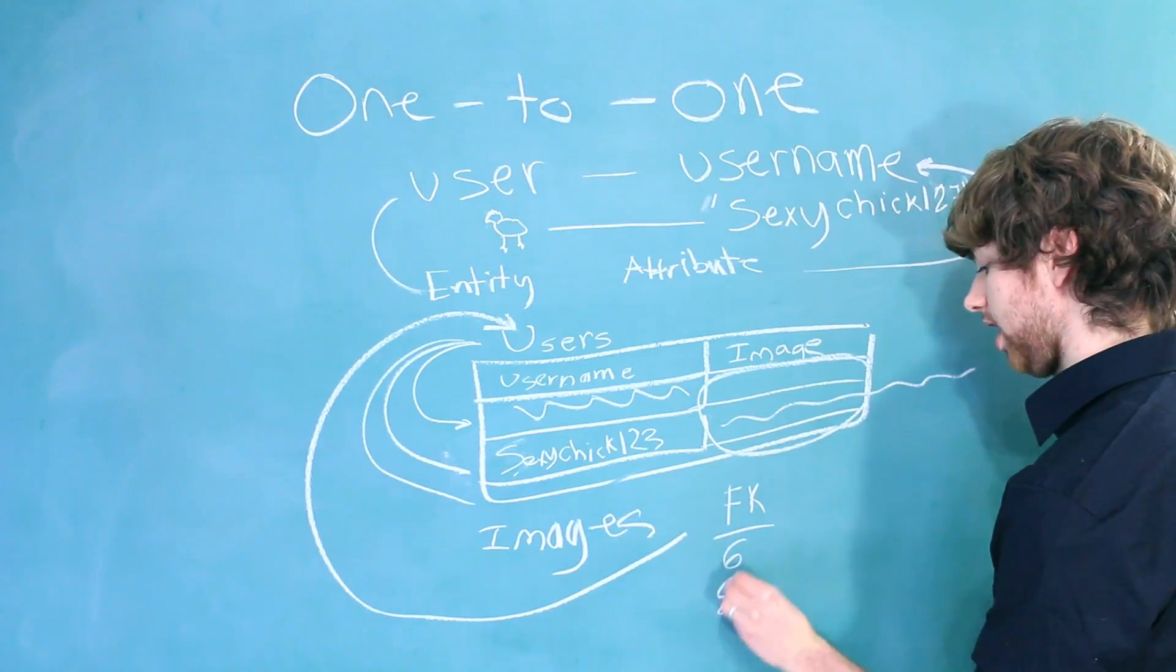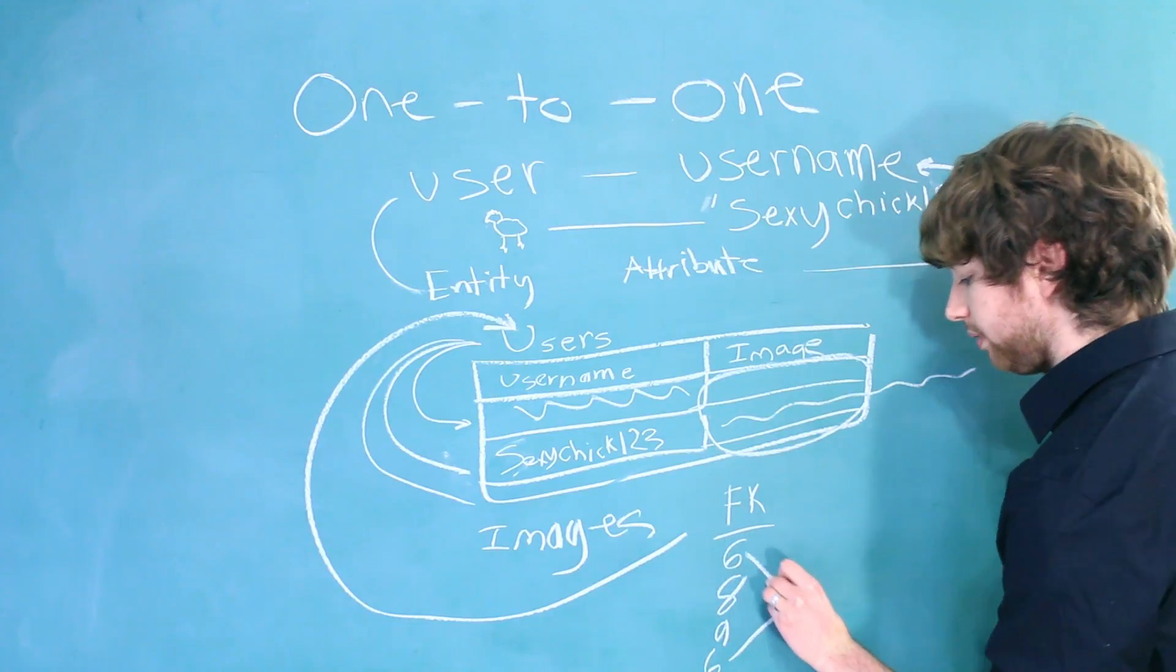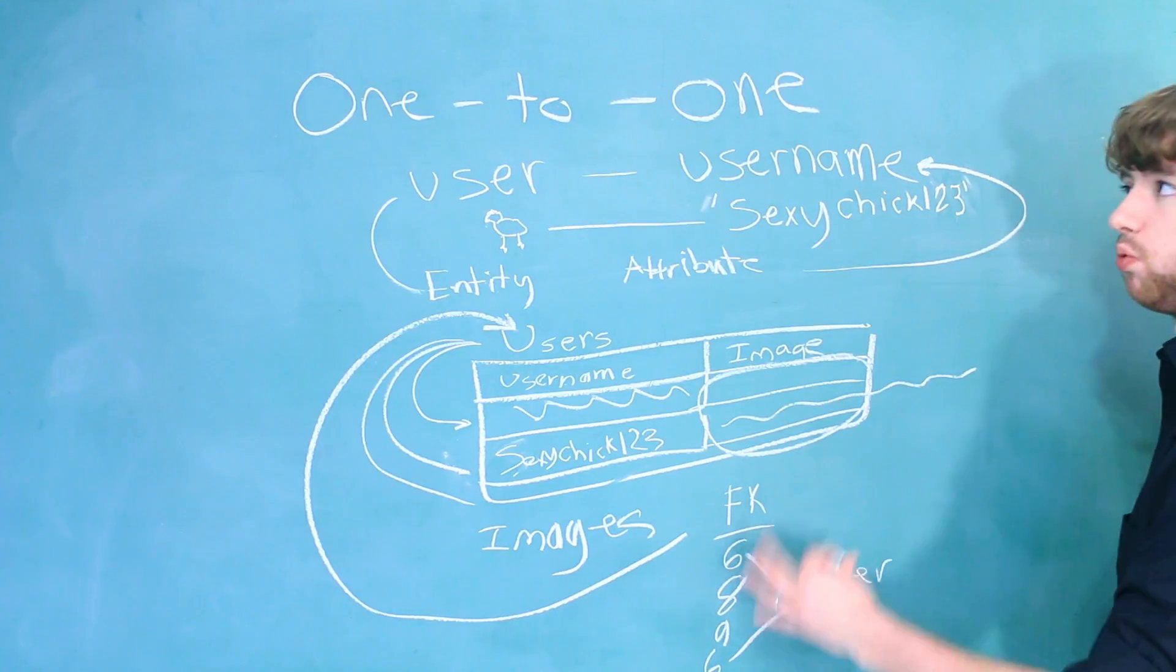So you'd have like six, eight, nine, and then if you gave the value six, that would be two images pointing to the same user. This would no longer be a one-to-one relationship.